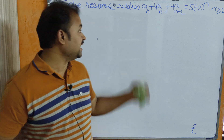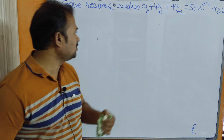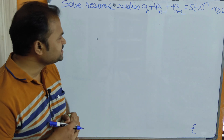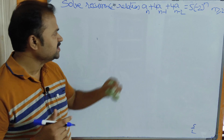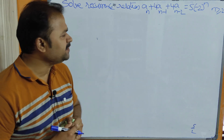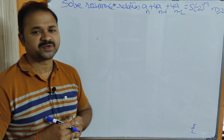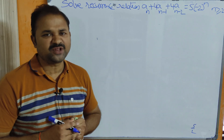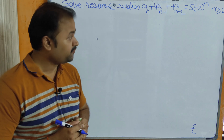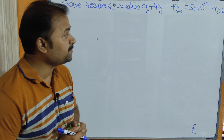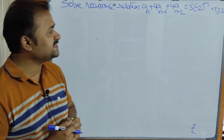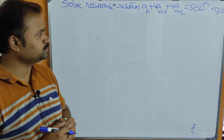Now let us solve this problem. Solve the recurrence relation aₙ + 4aₙ₋₁ + 4aₙ₋₂ = 5·(-2)ⁿ, where n is greater than or equal to 2.